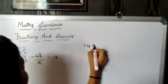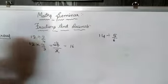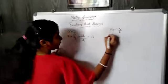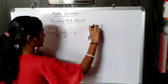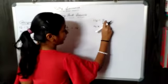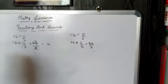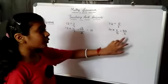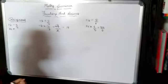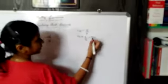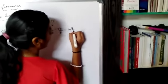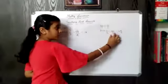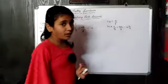Let us solve another problem: 14 divided by 5 upon 6. Same method — 14 stays the same, division becomes multiplication, and the reciprocal of 5 upon 6 is 6 upon 5. So 14 into 6 gives 84 upon 5. Since 84 is not divisible by 5, we cannot simplify it. So the answer is kept as a mixed fraction: 16 and 4 upon 5.